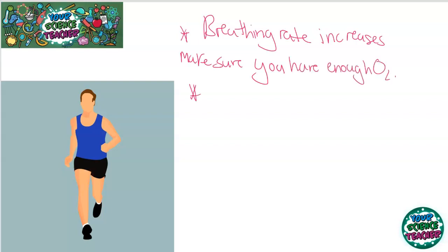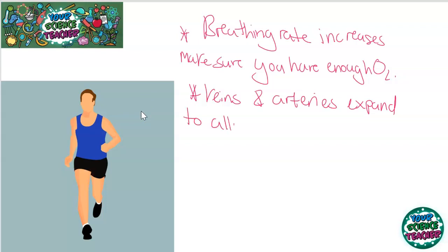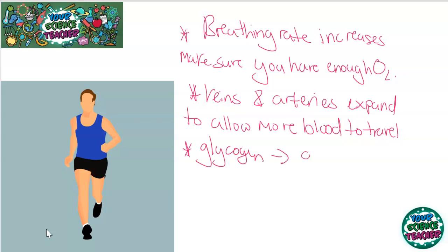Another response is that your veins and arteries will get bigger — they will expand. This allows more blood to travel around the body, meaning your cells can get oxygen faster and respire quicker. Another response is converting glycogen back into glucose. Glycogen is a store of glucose; our body converts glucose into glycogen because it's not soluble in water, and when your body needs it again it converts it back to glucose so that it can be used. The last body response to exercise is your heart rate increasing.